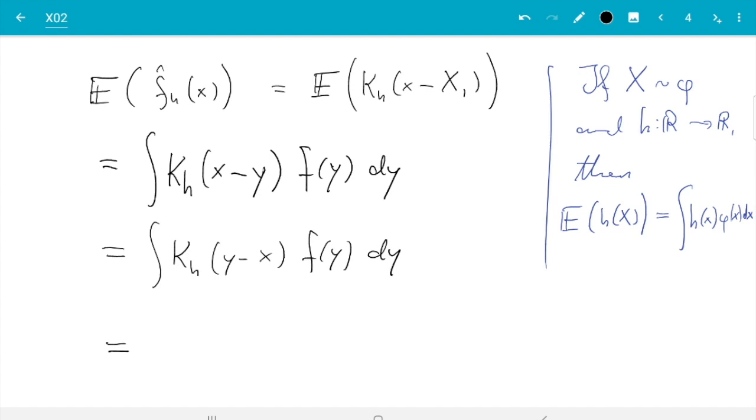So the substitution rule for integrals: I write z = y minus x, and then I get integral k_h(z), and y is z plus x, so I get f(z plus x). Then the derivative of the transformation dz equals dy, so here's just a 1 dz.